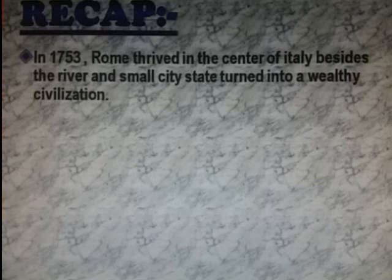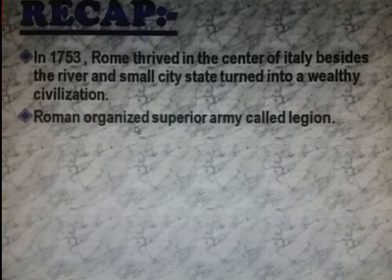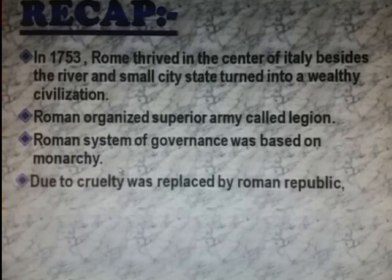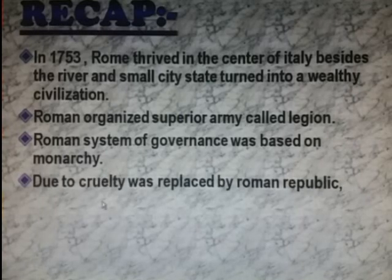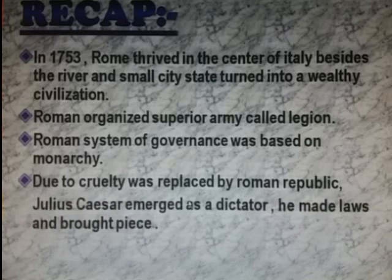Here is a recap. Rome thrived in the center of Italy beside the river, and a small city-state turned into a wealthy civilization. Romans organized a superior army called a Legion. The Roman system of governance was based on monarchy. Due to cruelty, monarchy was replaced by the Roman Republic. Julius Caesar emerged as a dictator, made laws, and brought peace.